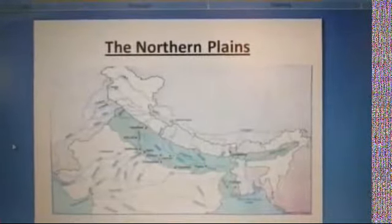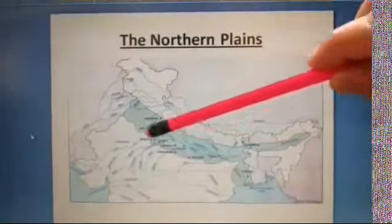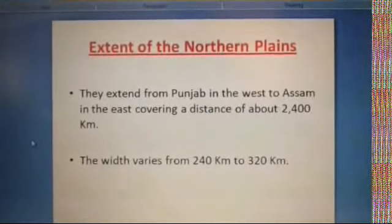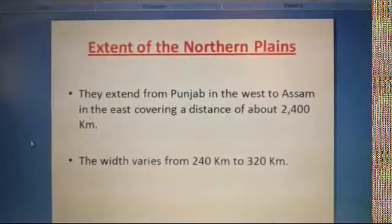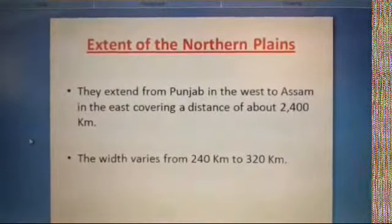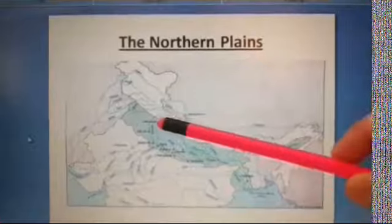Now let's look at the map. The shaded part from the west, that is from Punjab, to the east, that is Assam, is the Northern Plains. The topmost portion is the Northern Mountains, and south to these mountains are the Northern Plains. The length of the portion from Punjab in the west to Assam in the east covers a distance of about 2400 kilometers.